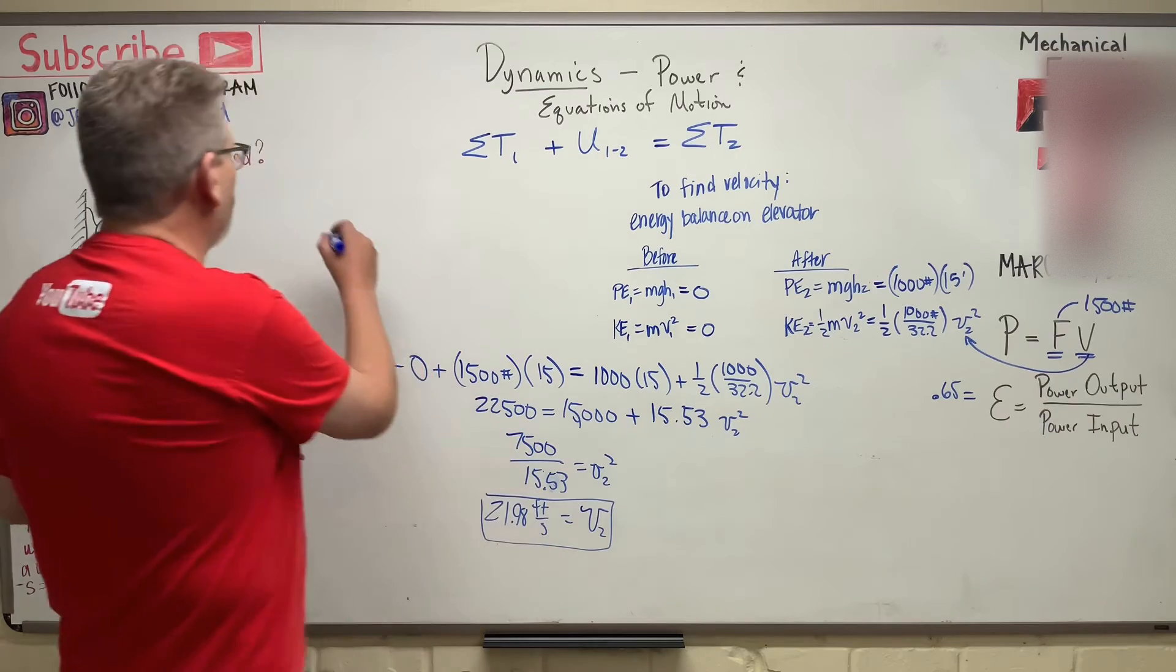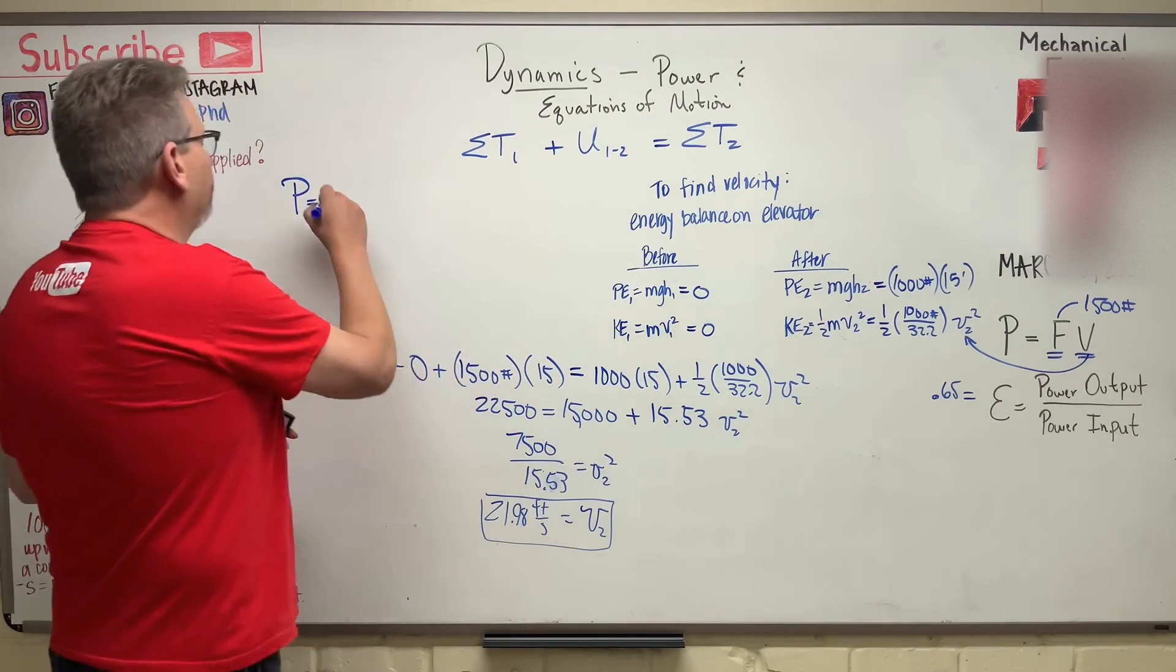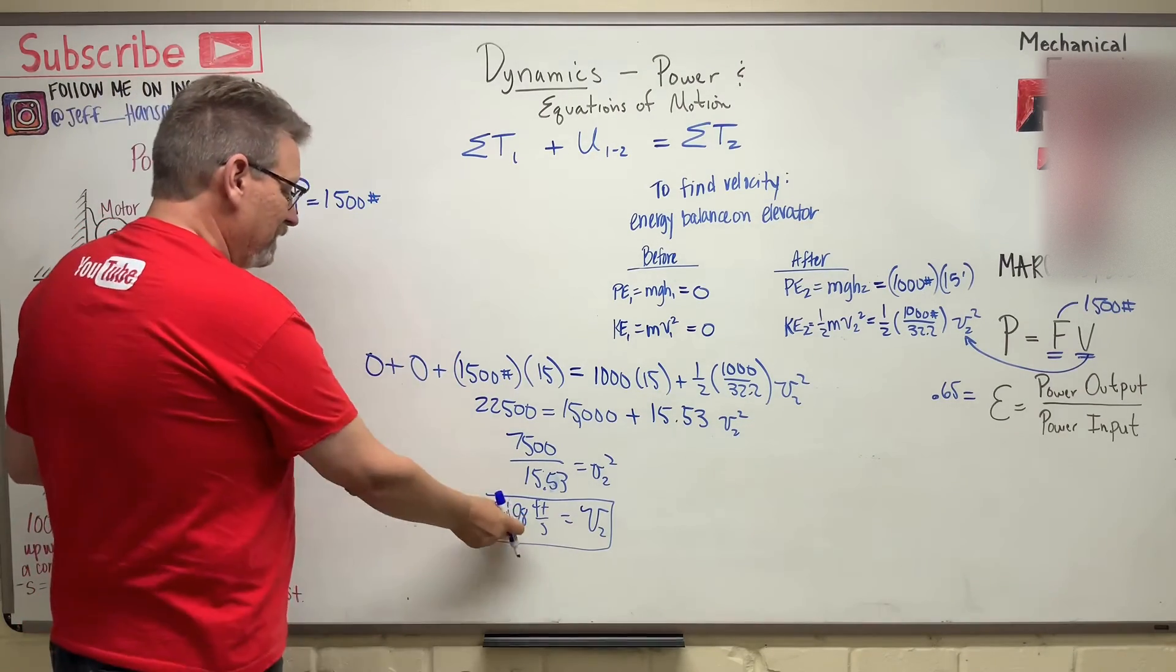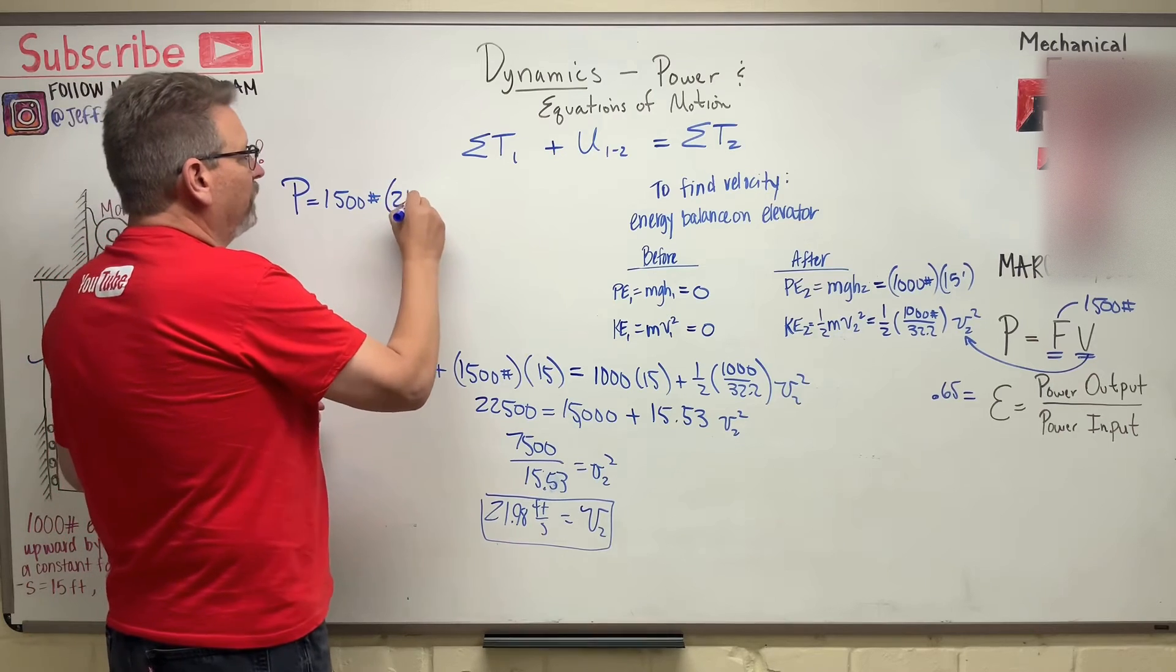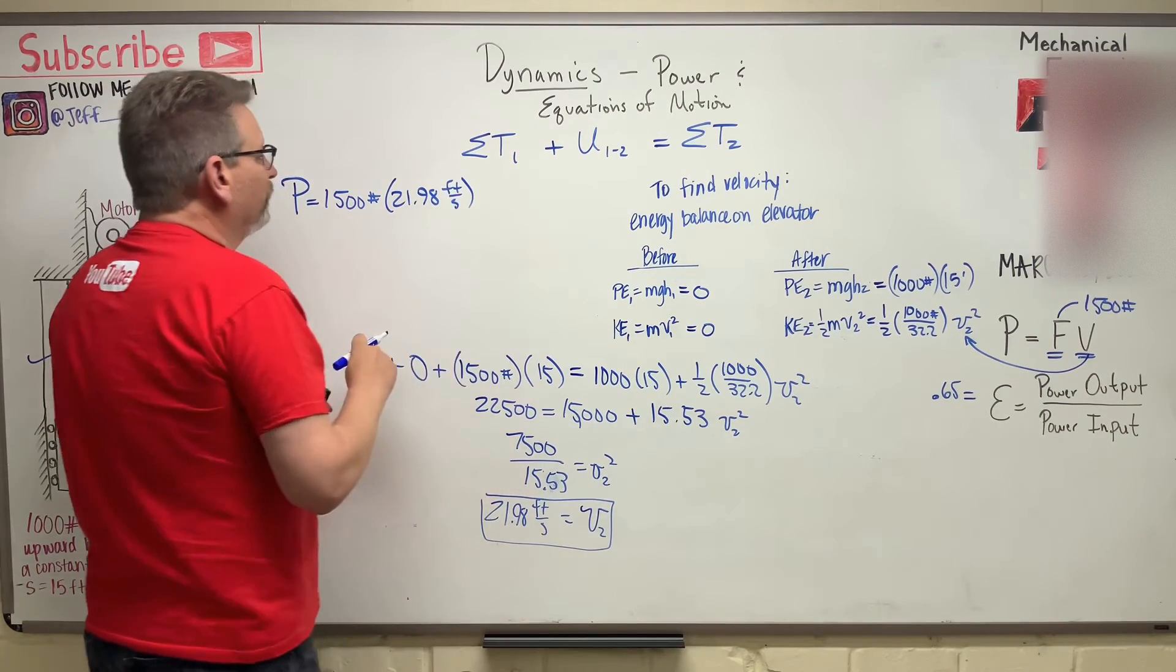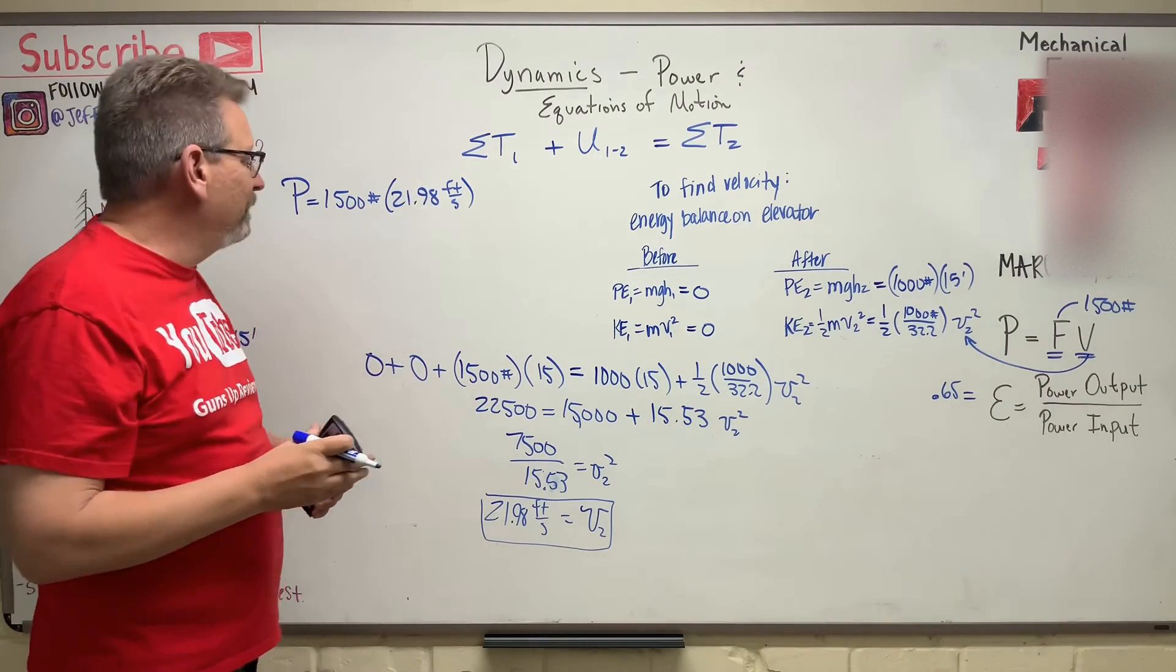The power is equal to F times V, so 1,500 pounds, and be real careful with your units here, times 21.98 feet per second. So that's going to give me pound feet per second. You know what that is.